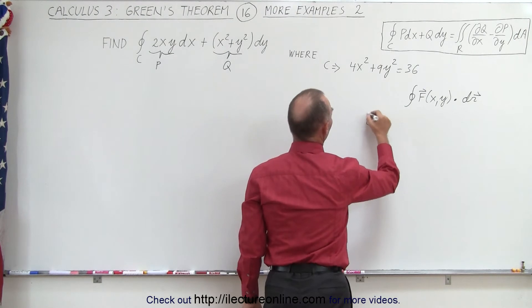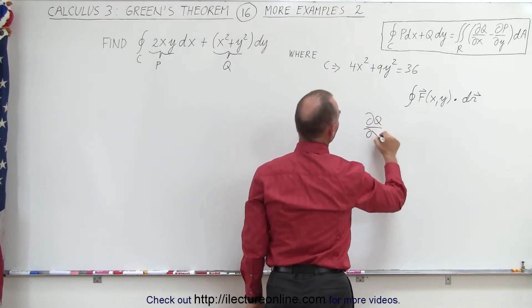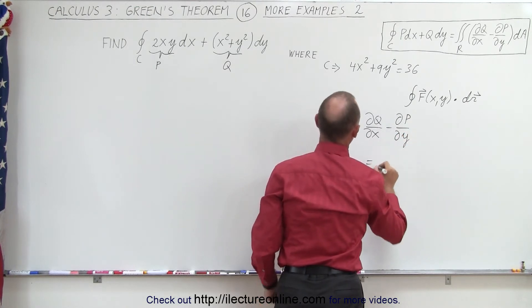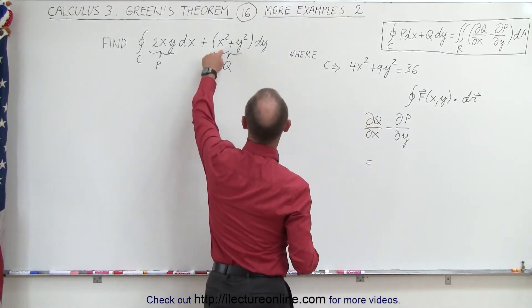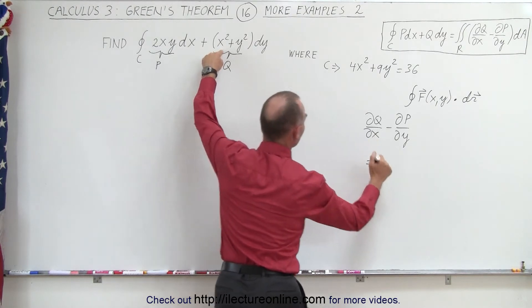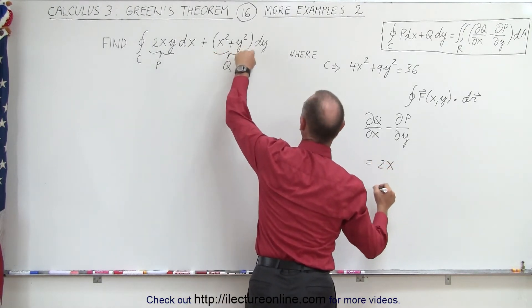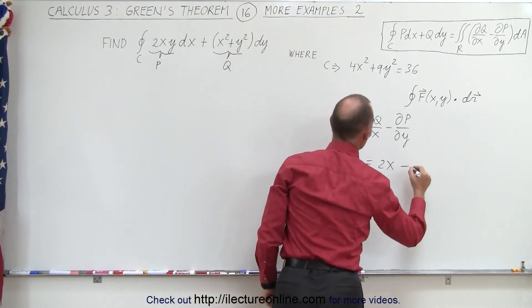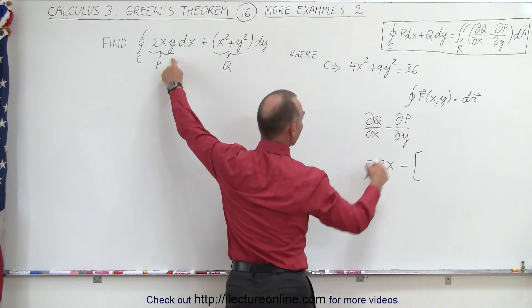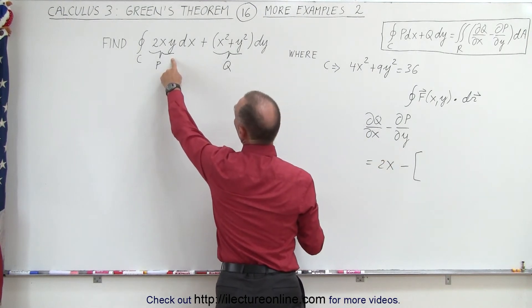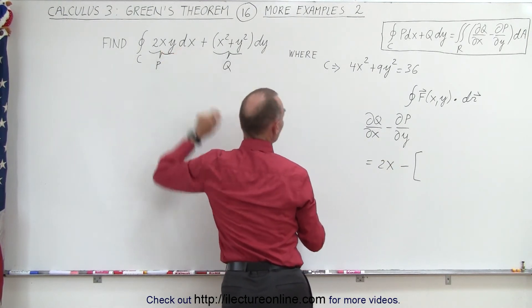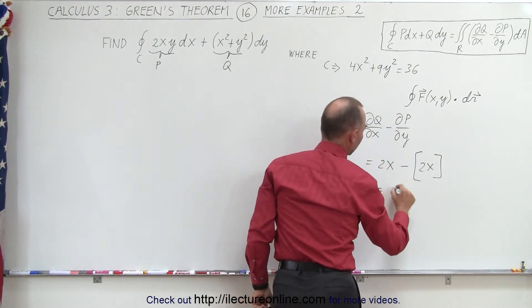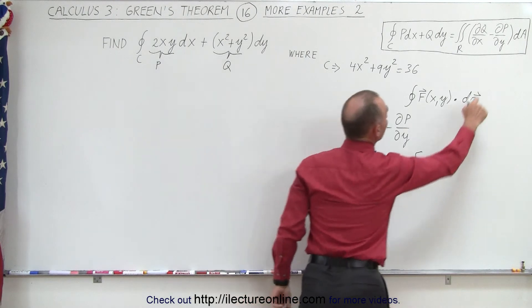So what we want here is we want the partial of Q with respect to X minus the partial of P with respect to Y. So this is going to be equal to, so here's our Q, take the derivative with respect to X that would be 2X and of course the derivative of this that would be a constant goes to 0 minus the derivative of P with respect to Y and so if Y is the variable then we get 2X. So here we see we at 2X minus 2X which is equal to 0 which means the integrand is equal to 0.